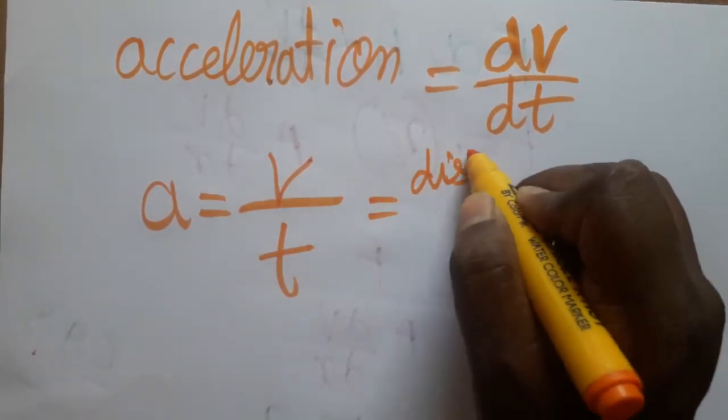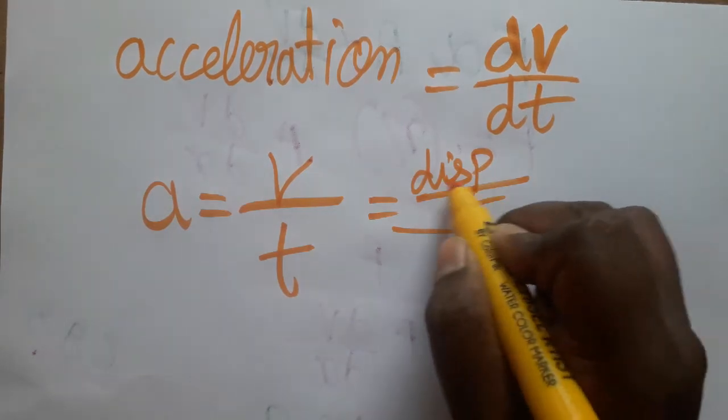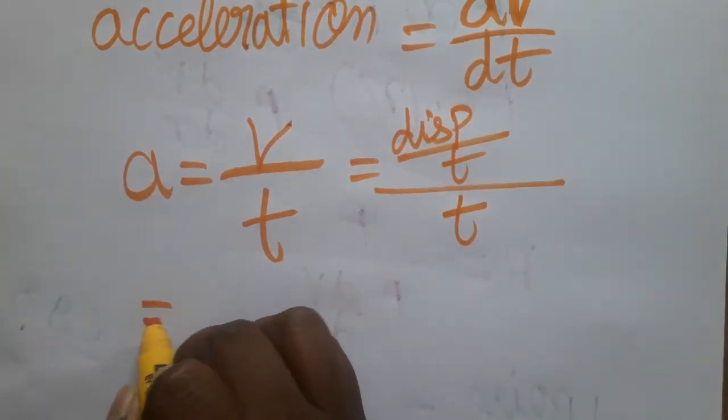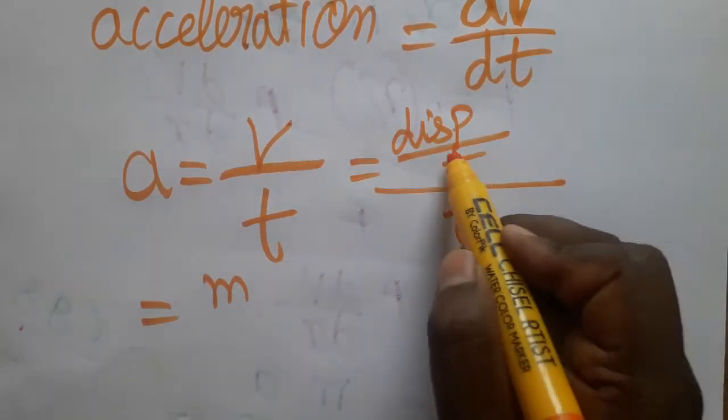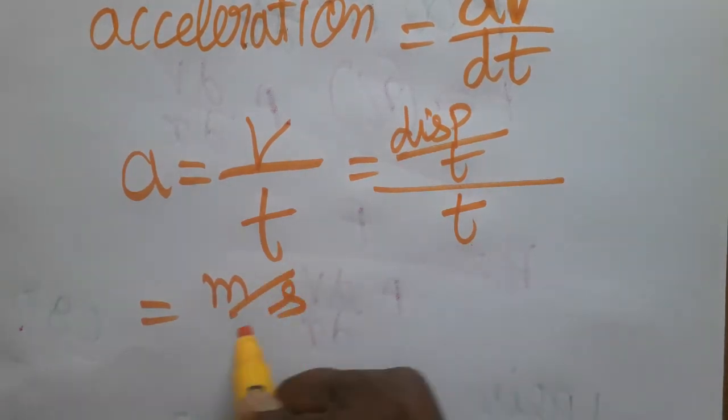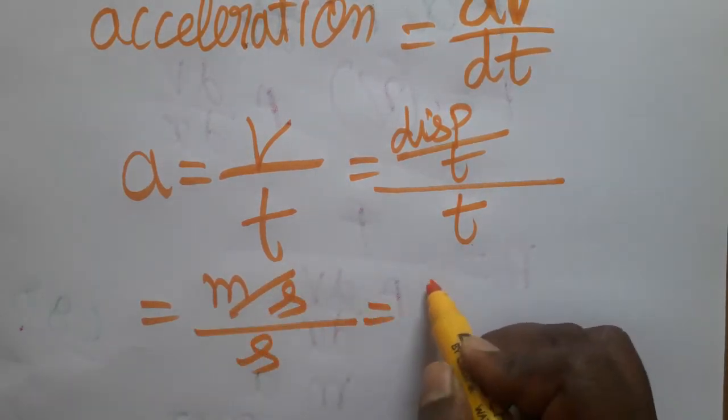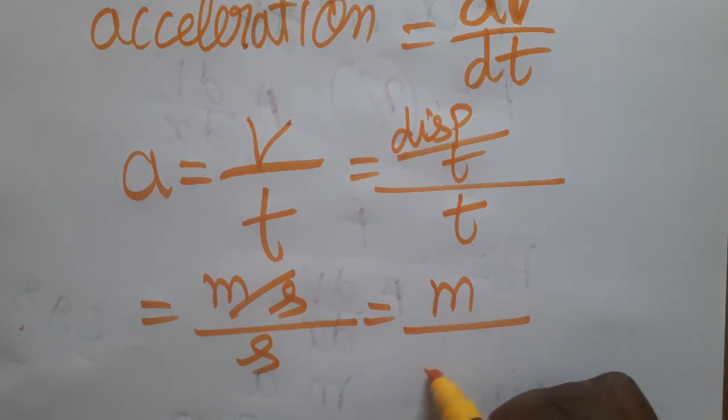Velocity is displacement by time divided by time. The unit of displacement is the meter, and the unit of time is the second. We have time in the denominator again, so we'll get meter by second squared.